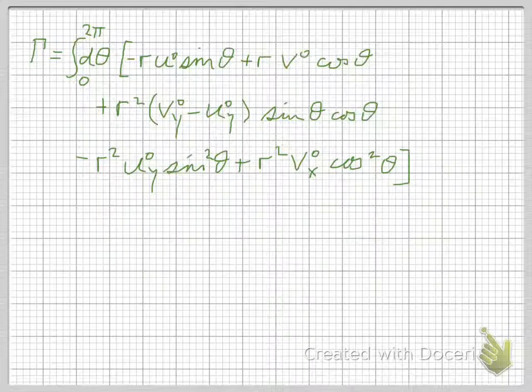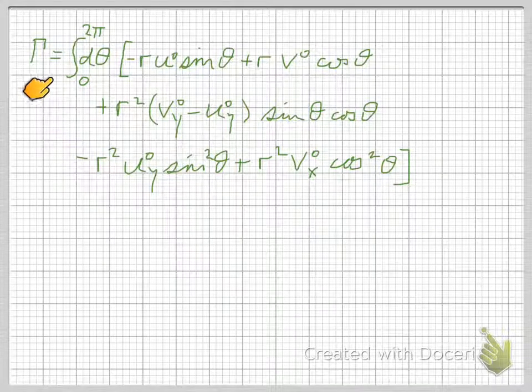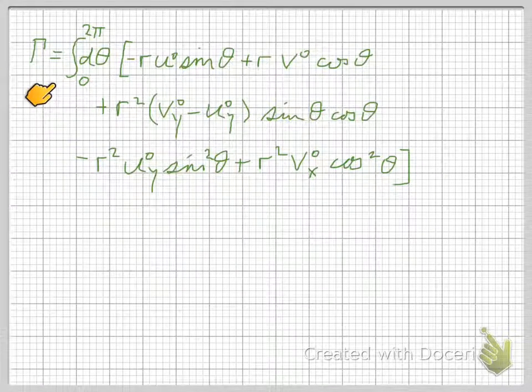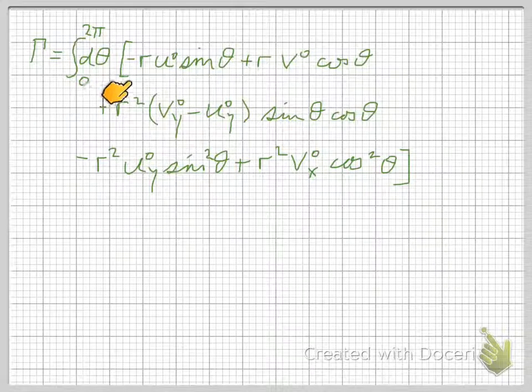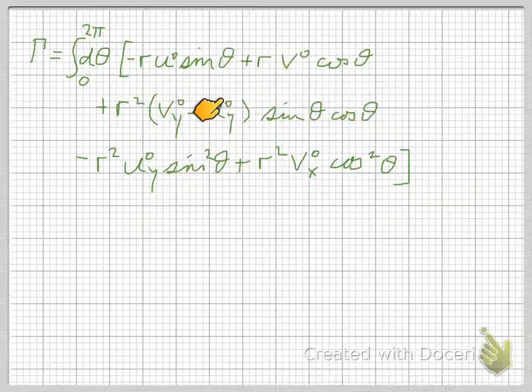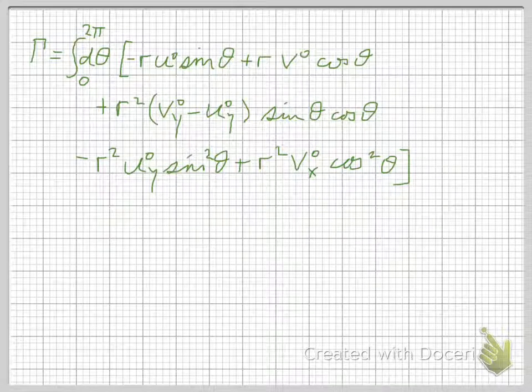So, the integral we have for the circulation is an integral with respect to theta, and it's all the way around the circle, so the integral goes from 0 to 2pi. The integral goes from 0 to 2pi, and then it's got 6 terms in it, and I've collected up these 6 terms into one proportional to sin theta, to cos theta, to the product sin cos theta, sin squared theta, and cos squared theta, and we know how to integrate each of those functions from 0 to 2pi.